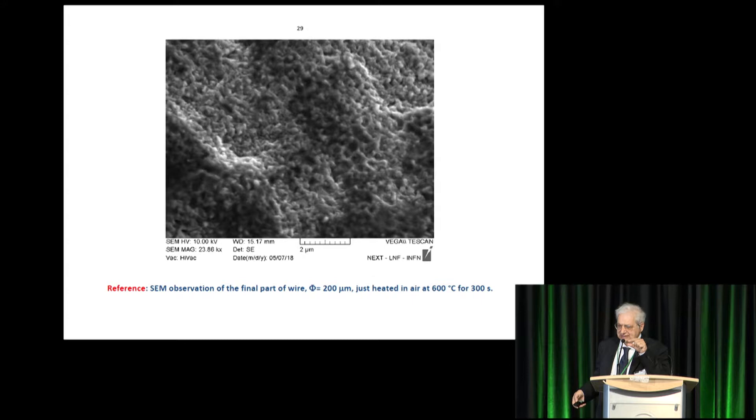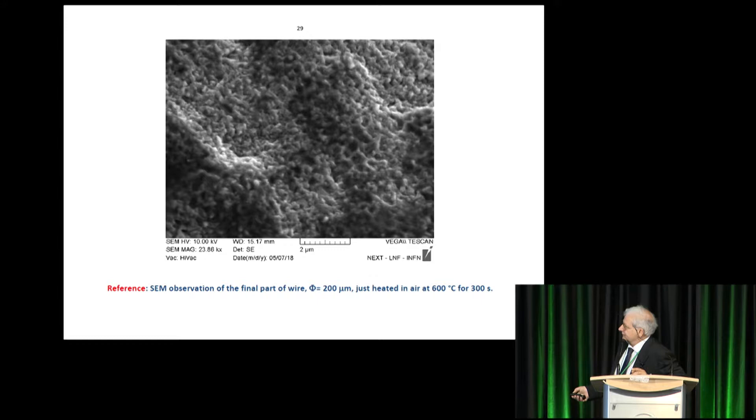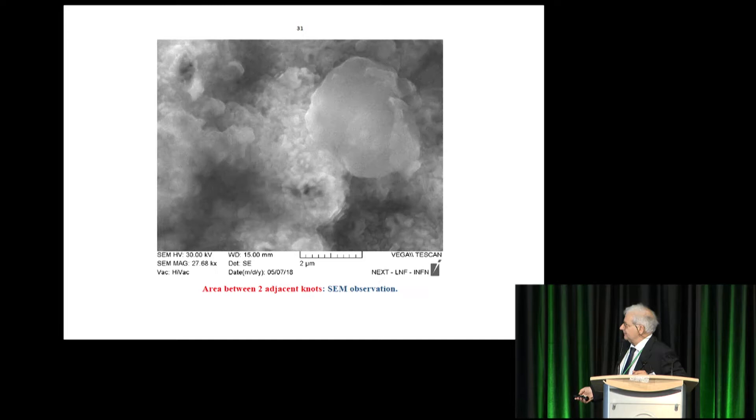This is a wire of Constantin, just warmed in air, for 300 second, at 600 degree. The structure is quite regular. The second, at the top of the knots, the changing is really dramatic. Really dramatic. At the third, in the area between knots. So, some pairs collapse each other, so, contact.